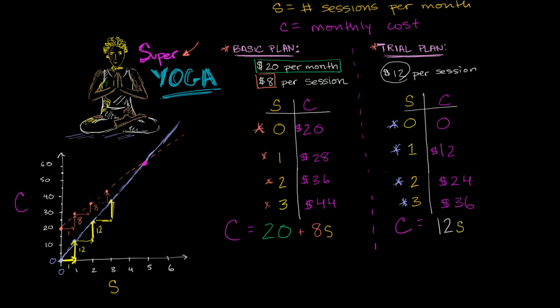In the last video, we began to visually explore the relationship between the number of sessions I attend and my monthly cost, given the different plans. Right here in this blue line, we visualized it for the trial plan. And in this orange dotted line, we visualized it for the basic plan. It intuitively represents what we already understood about the different plans.